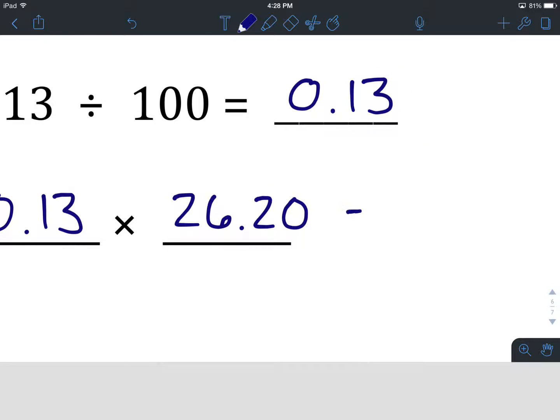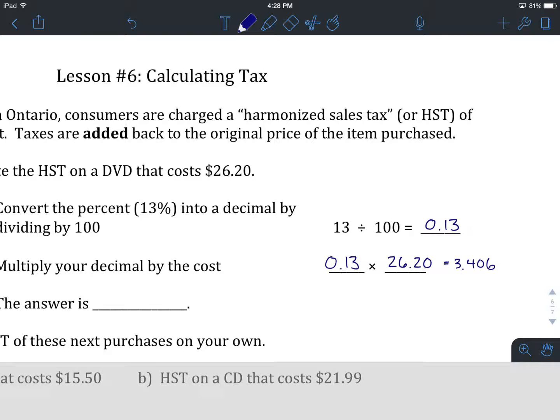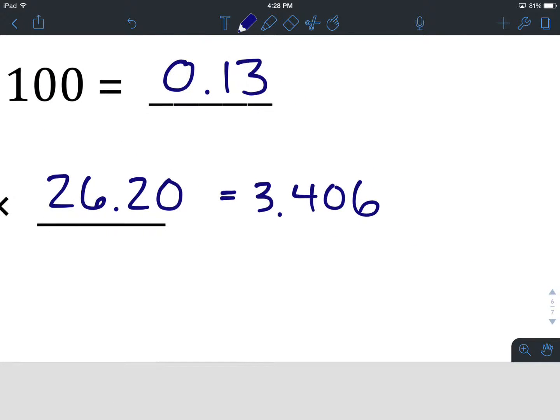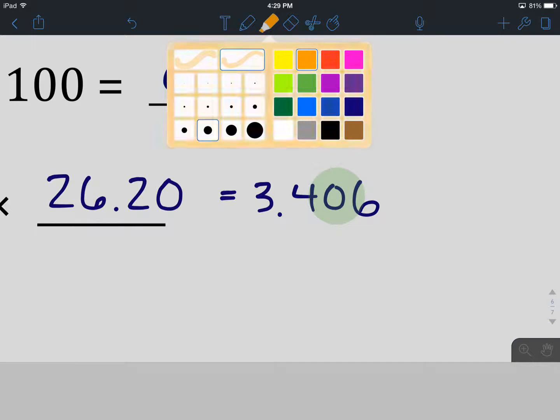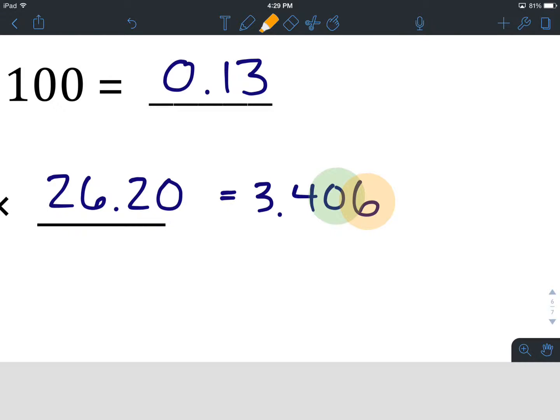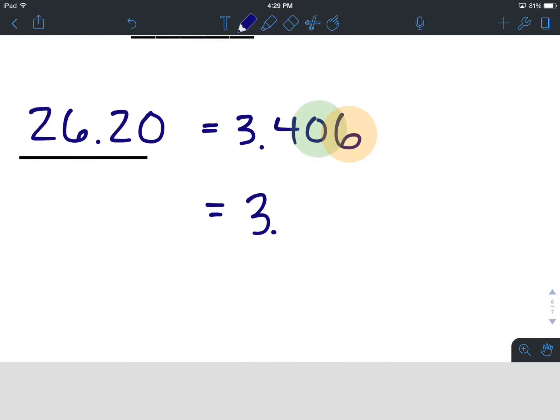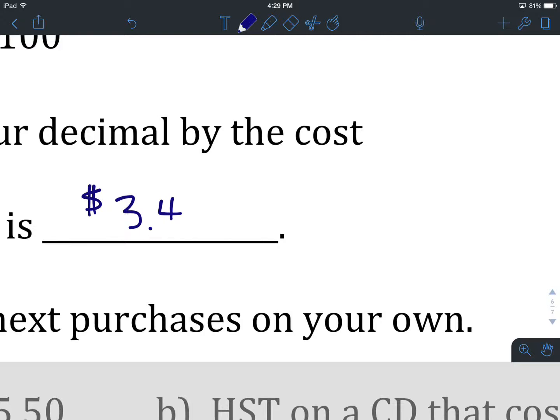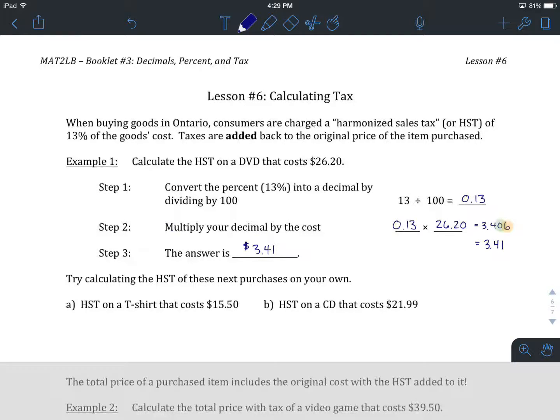Now that's going to give us 3.406. This gives us an opportunity to do some rounding. Because we're talking about money, in the context of this question, we want to round to the nearest cent. If we look at our 3.406, and we want to round it to the nearest cent, cent is right here, happens to be a 0. When we're rounding to a place value, we look to the digit after it, in this case it's going to be a 6, and we see what type of rounding it's asking us to do. We are being asked to consider a 6. A 6 is going to ask us to round that 0 up, so we are going to end up with $3.41 as our HST. The HST on a DVD that costs $26.20 is $3.41. That's 13% of $26.20.